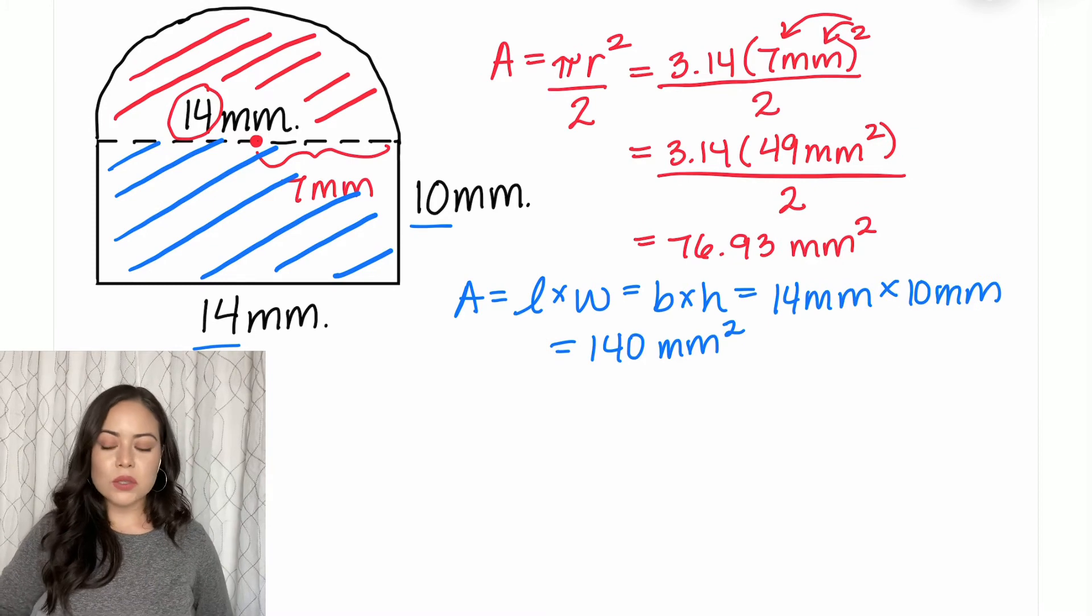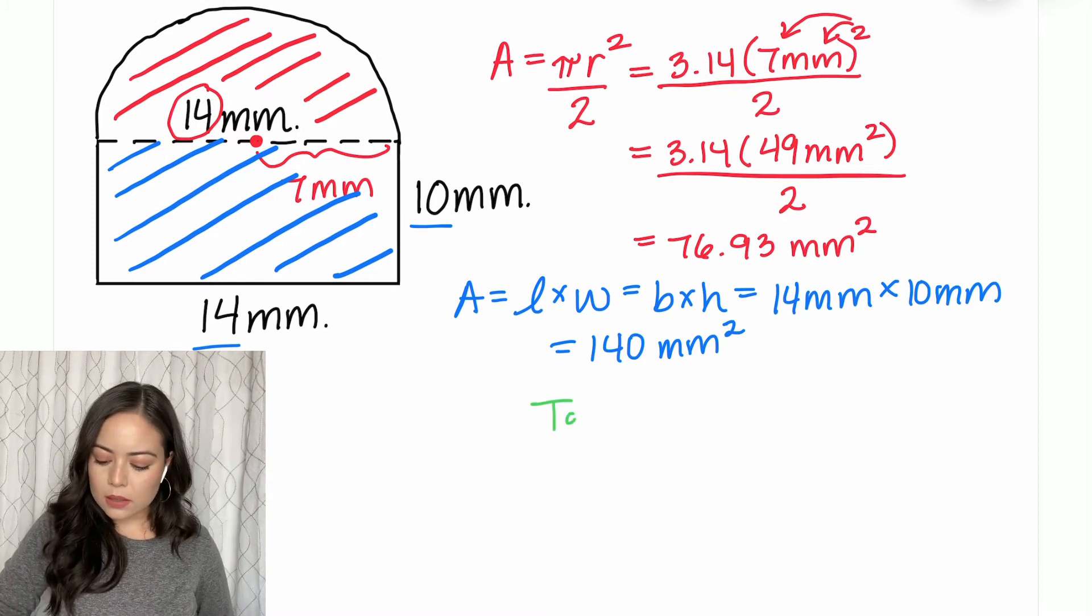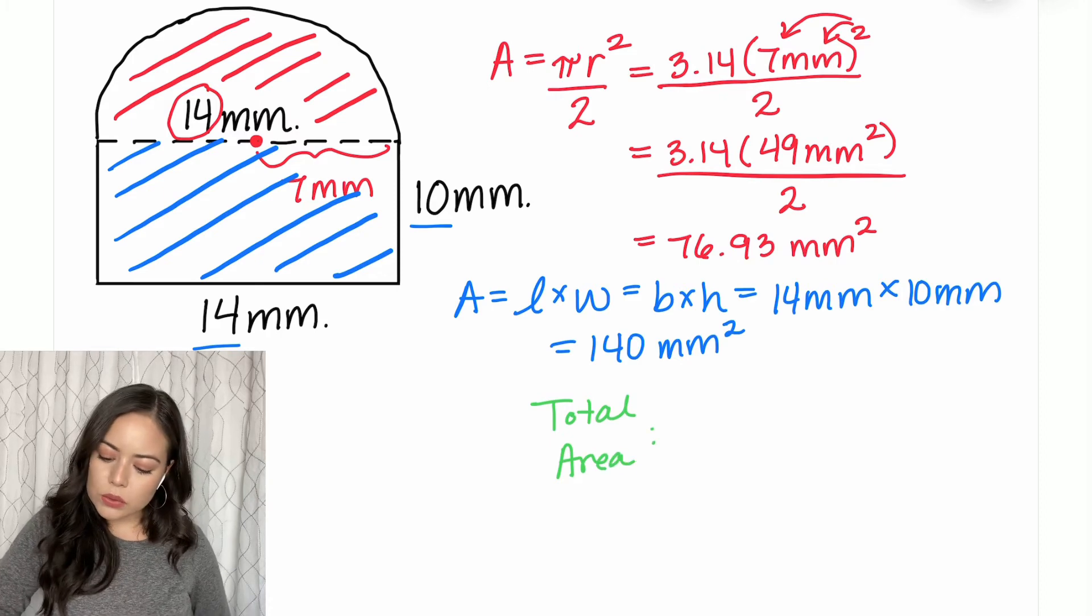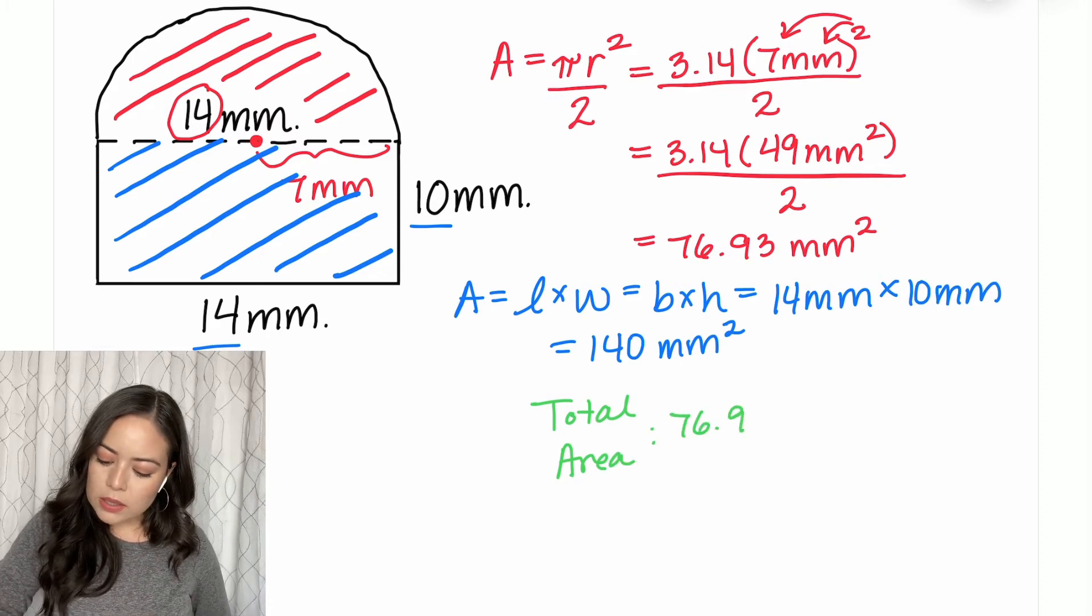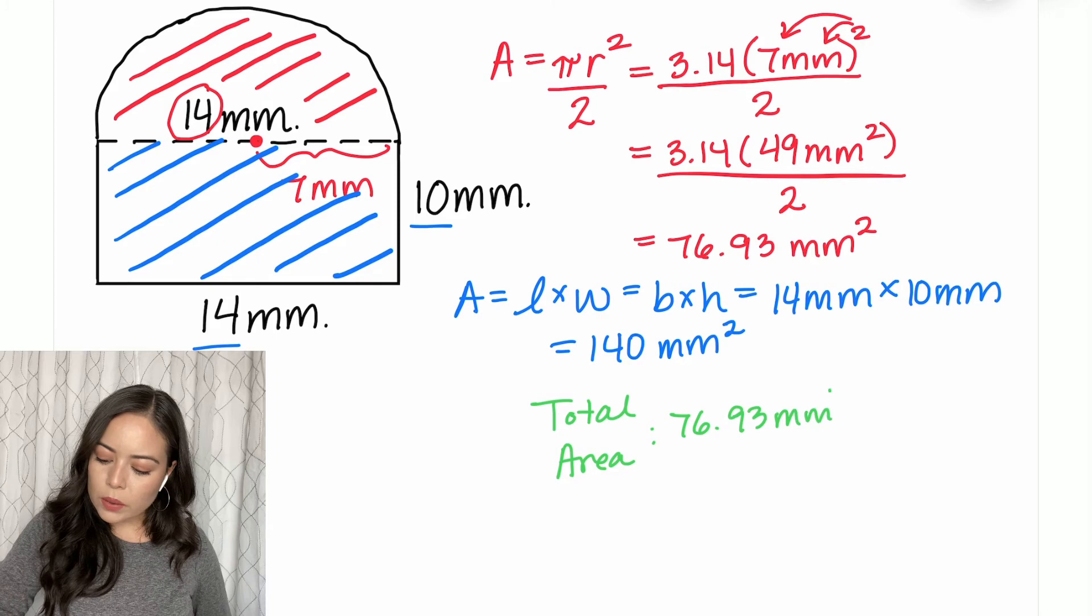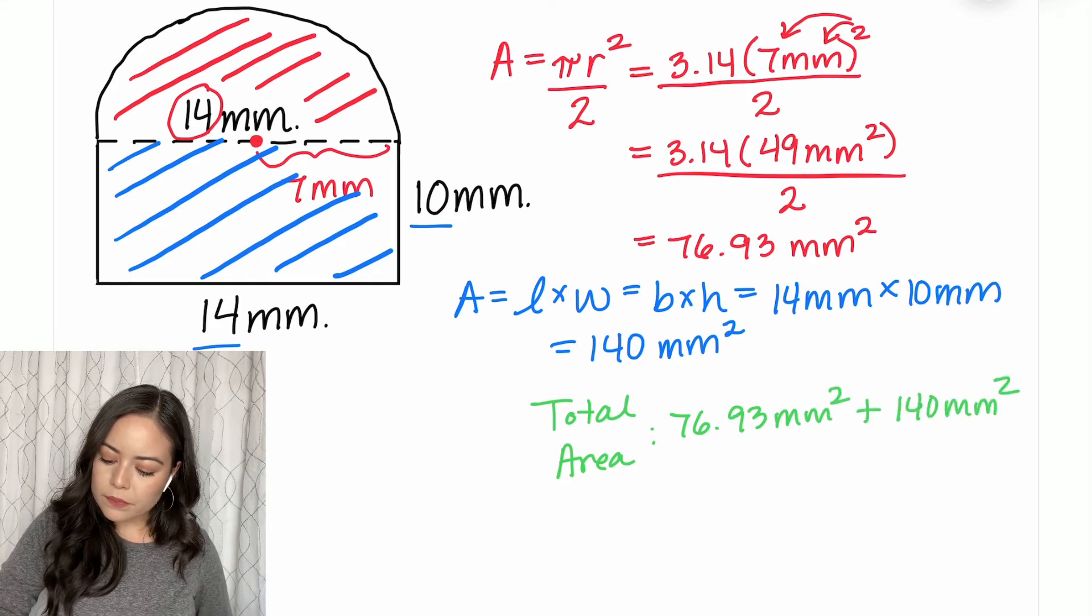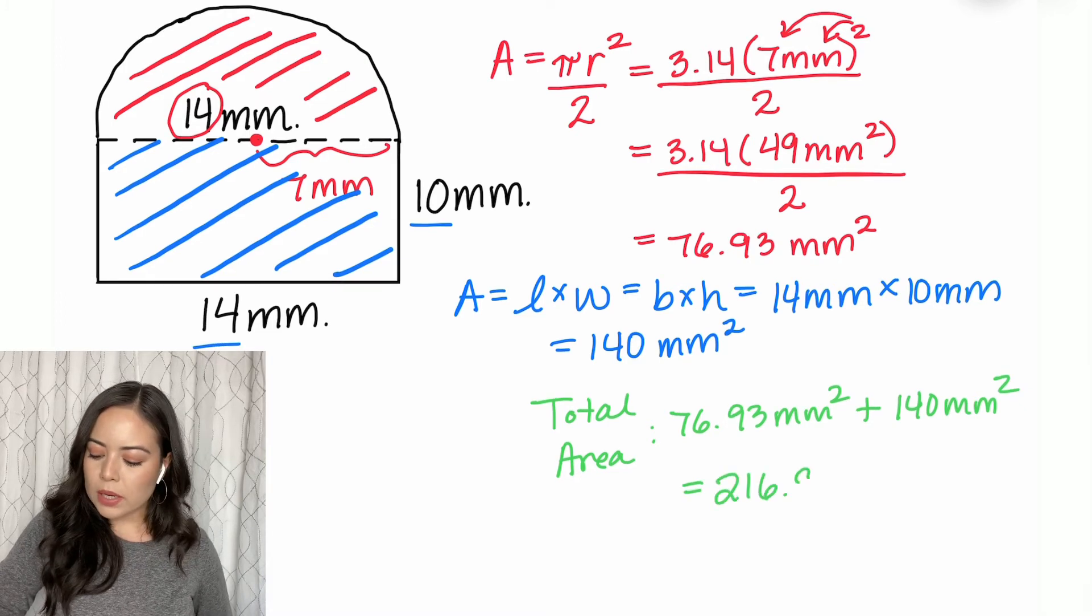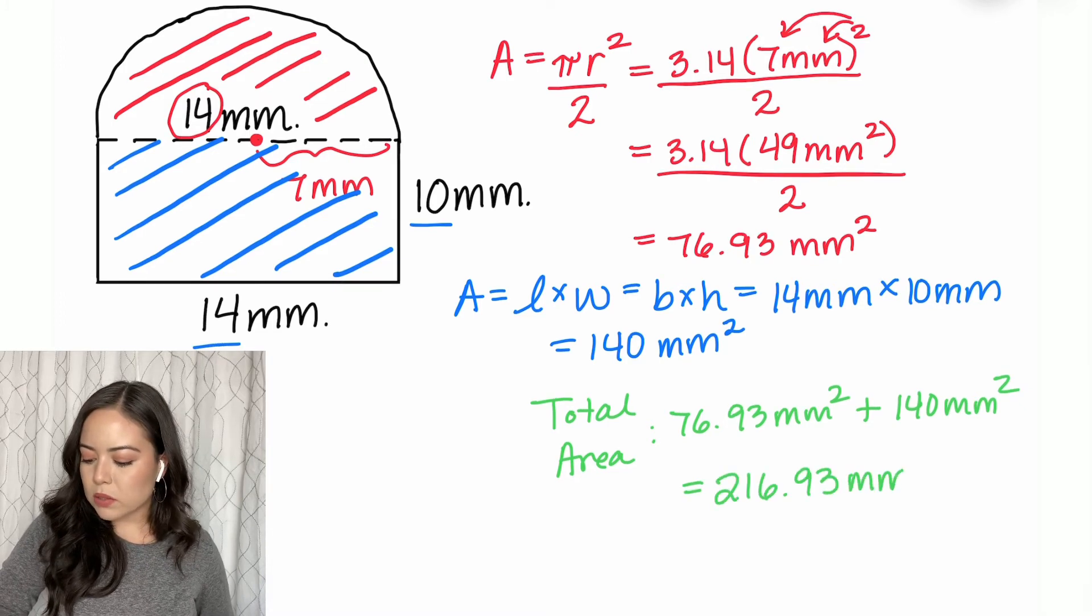And as I said earlier, to find the total area, I'm going to add the two smaller areas that we just found. So total area is equal to 76.93 millimeters squared, plus 140 millimeters squared. And we're going to get 216.93 millimeters squared.